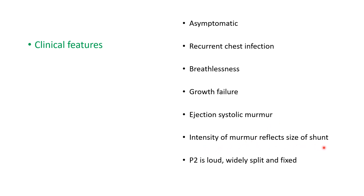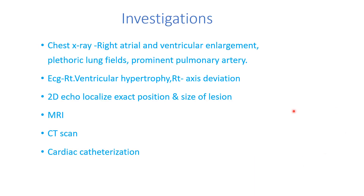The intensity of the murmur reflects the size of the shunt — the bigger the shunt, the more intense the murmur. P2 is widely split, fixed, and loud. On investigation, chest X-ray shows right atrial and ventricular enlargement, plethoric lung fields, and prominent pulmonary artery. ECG shows features of right ventricular hypertrophy and right axis deviation. 2D echocardiography localizes the exact position and size of the ASD. MRI, CT scan, and cardiac catheterization can also help.